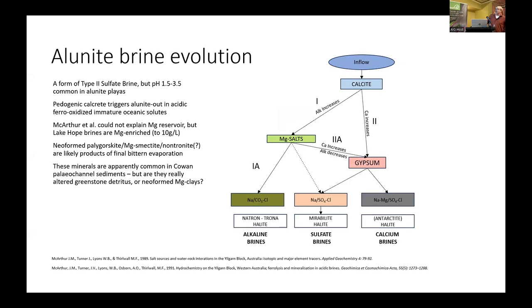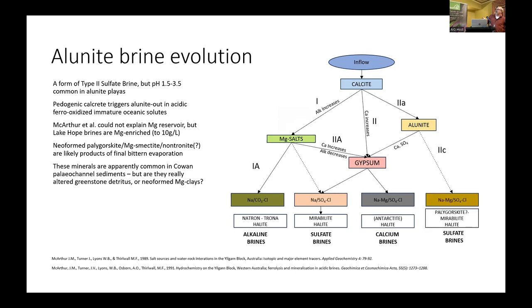In my opinion, the alunite brine evolution follows a path of calcite coming out in the soils, alunite forming, then gypsum forming. The residual brine is enriched in sodium, magnesium and sulfate — a lot more magnesium than the other sulfate brines. I've been told there's quite a lot of sepiolite and smectite nontronite in Lake Cowan, etc. — quite a lot of magnesium silicates in the sediments of these large systems — which has been assigned to the greenstone belts. That may not be the case, given that magnesium is a residual in the brines after you've taken the alunite out.